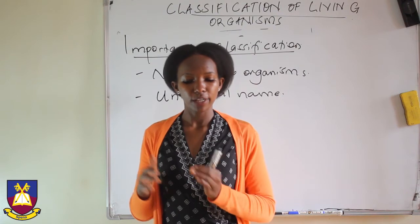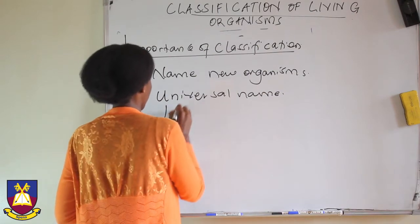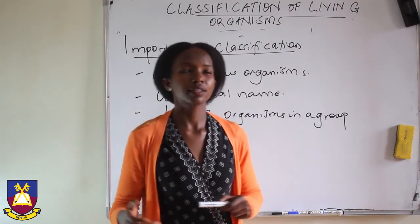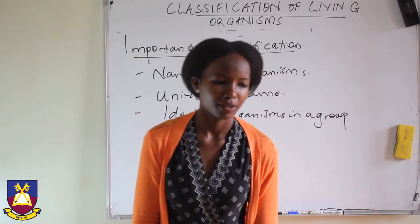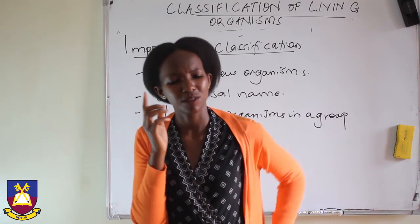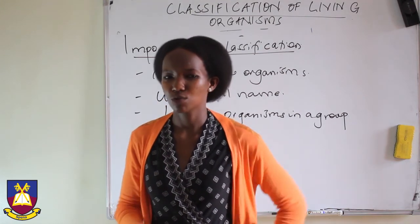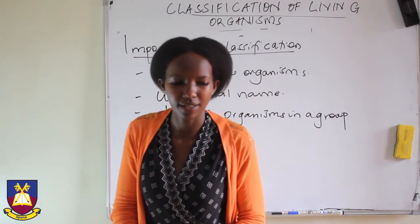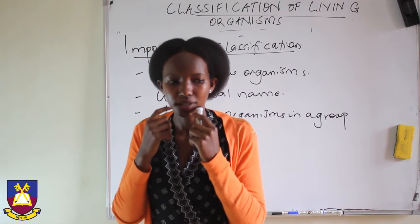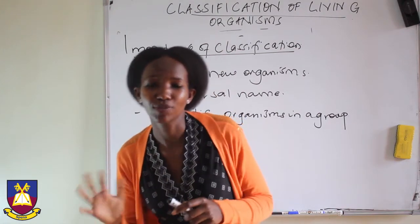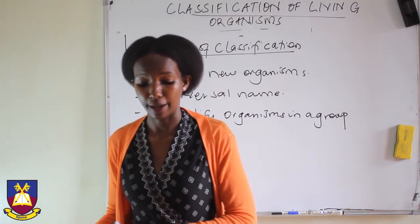Number three: organisms belonging to the same group can be easily identified. If I see an animal I have never seen before and it is walking on its foes and has fur, I will not say it is a plant — I will know it is an animal. If it is walking on its foes and has ears, probably it is a mammal. If it has pointed canines, I go on classifying because I already know the characteristics of organisms that look like the one I am classifying.